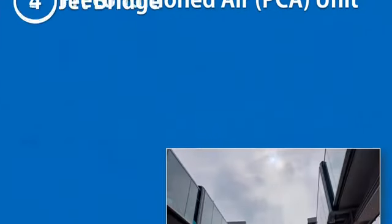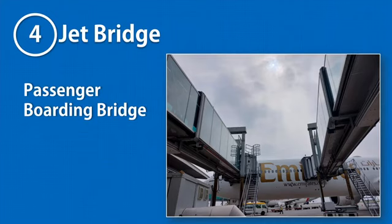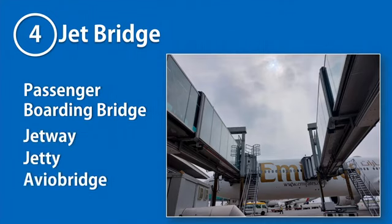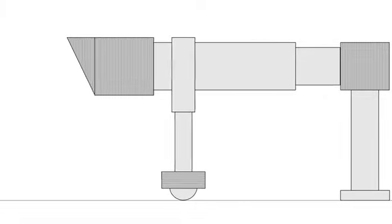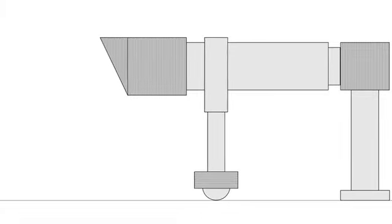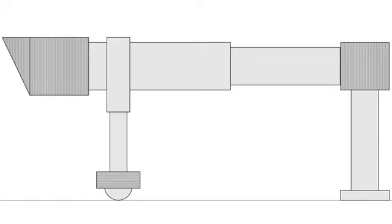A jet bridge, also known by many other names such as passenger boarding bridge, jetway, jetty, and aviobridge, is the largest ground support equipment on the ramp. It is a movable tunnel structure that makes a bridge connection between the aircraft and the passengers.